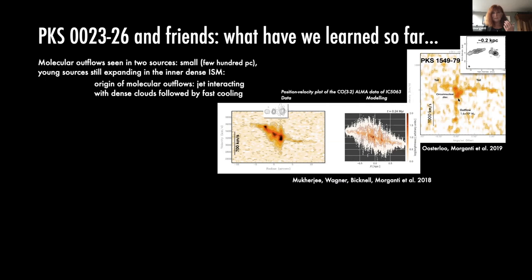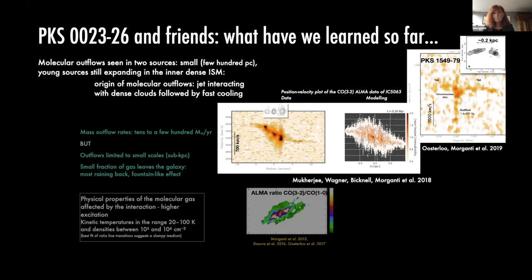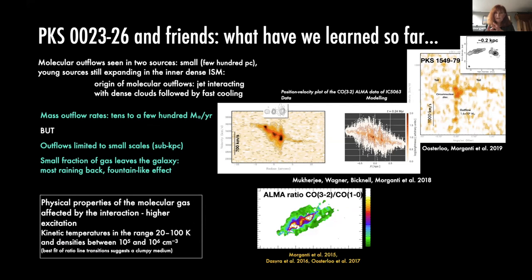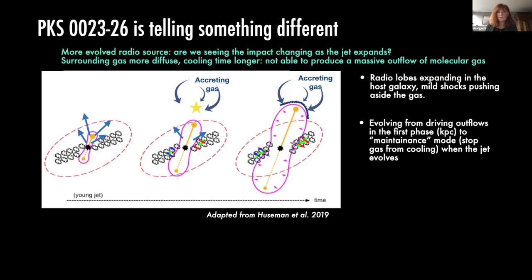We think the origin of these outflows is that you are in a region with a dense cloud, so even if the molecular gas is dissociated, fast cooling allows it to reform molecular gas — and we see this effect. The mass outflow rates tend to be on very small scales and go up to a few hundred solar masses per year — quite large but limited to a very small area. The excitation conditions also get affected: in regions co-spatial with the radio source, we see higher excitation and different line ratios.